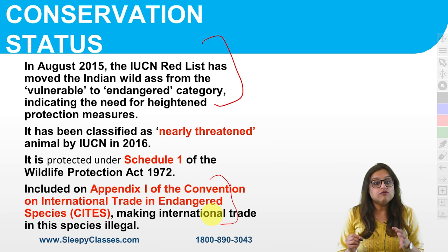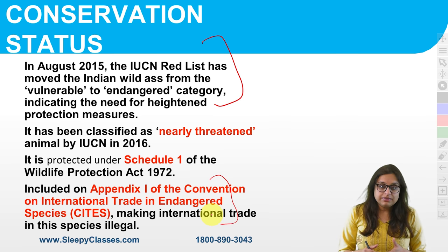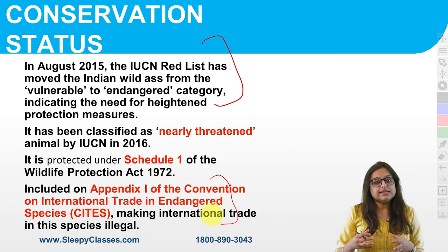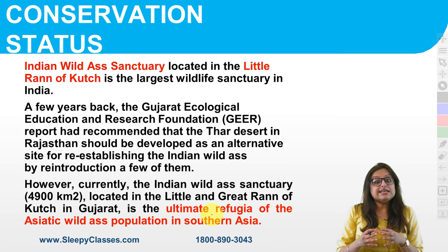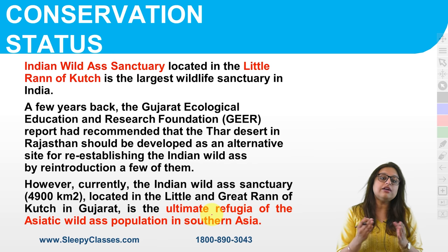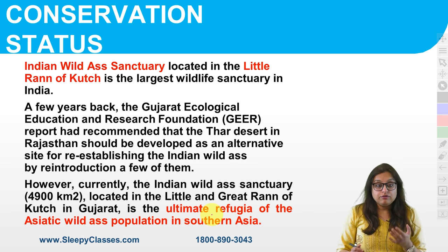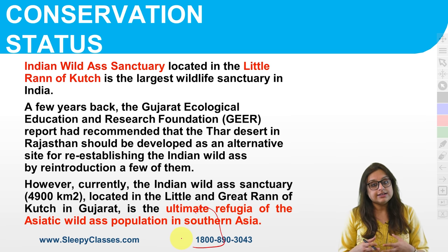The Indian Wild Ass comes under Schedule 1 of the Wildlife Protection Act and Appendix 1 of CITES — meaning international trade is illegal and it gets absolute protection under both instruments. The Indian Wild Ass Sanctuary is in the Little Rann of Kutch, and that is the only protected area for Indian Wild Ass. It is the ultimate refugia of Asiatic Wild Ass population in Southern Asia.